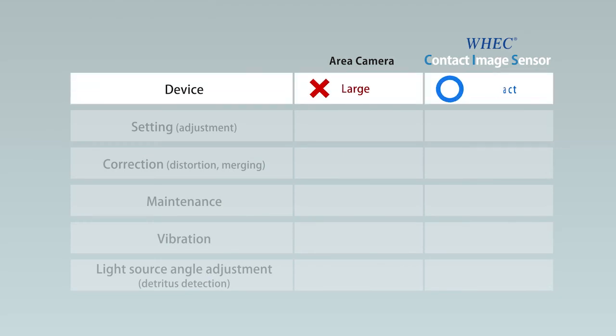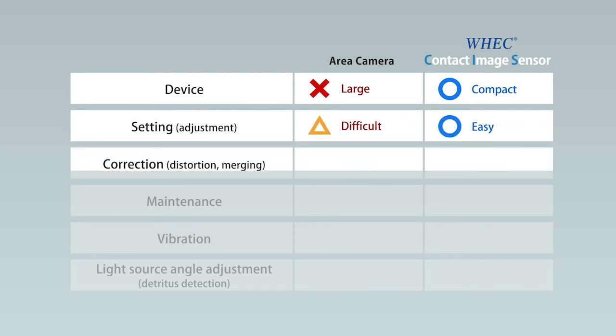CIS is compact and consume little power. Unlike area cameras, they do not require time-consuming setting, image collection, image processing, or maintenance.